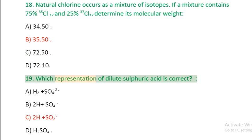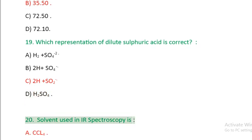Question 19: Which representation of dilute sulfuric acid is correct? A. H₂⁺ SO₄²⁻, B. 2H⁺ SO₄²⁻, C. 2H⁺ sulfur dioxide²⁻, D. H₂SO₄.